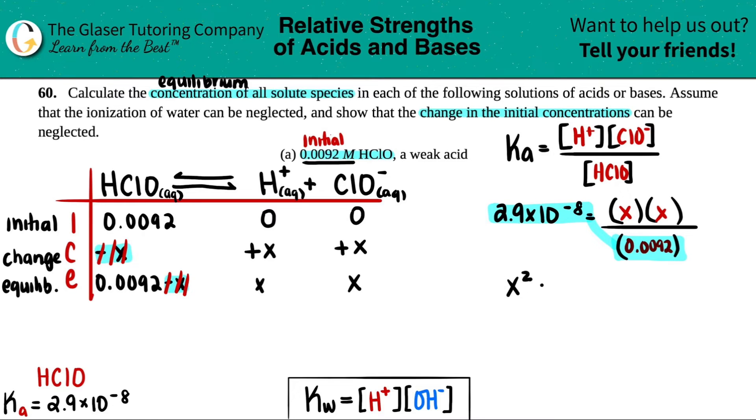So X squared, I have two X's equals, 2.9 times 10 to the negative eighth times 0.0092. And I'm not going to round because this is not the answer yet. So 2.668 times 10 to the negative 10th. I want to just solve for X. So I'm just going to do the square root on both sides. That will get rid of this squared. So I have X equals, and now, since we're solving for concentrations, we'll do two sig figs because that's what we started with here. So it would be 1.6 times 10 to the negative fifth.